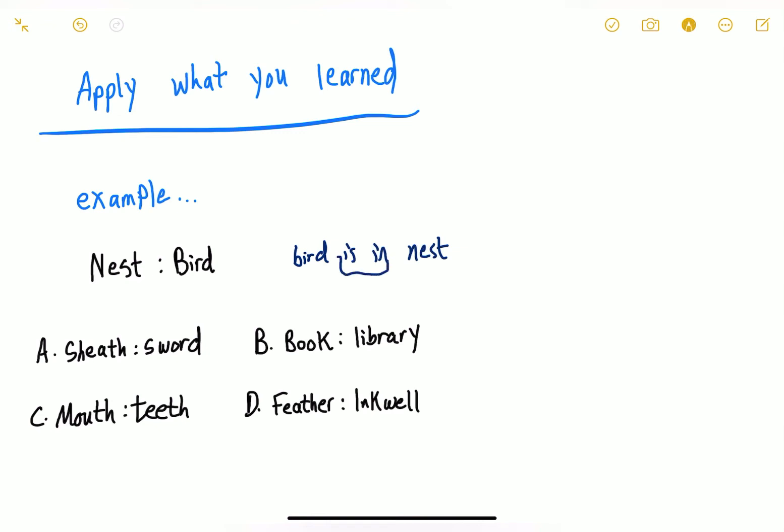So we have to find the relationship which is 'in'. Let's look at our choices. Does the sword go in the sheath? Yes. Does a library go in a book? No, this is a no because a book goes in a library, not the other way around. Does teeth go in a mouth? Yes, we have two correct answers. Does an inkwell go in a feather? No.